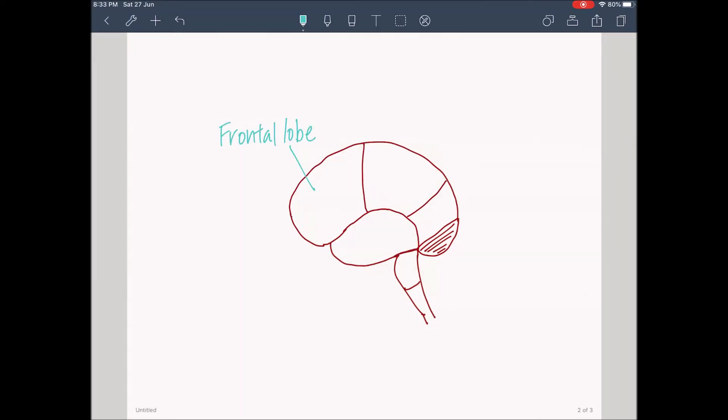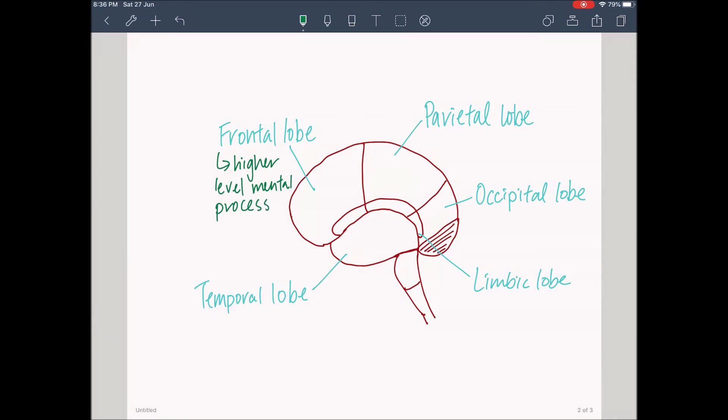The principal lobes of the brain are the frontal lobe, the parietal lobe, the occipital lobe, the temporal lobe, and the limbic lobe. The frontal lobe is responsible for higher-level mental processes, such as reasoning, planning, problem-solving, motivation, emotions, and speech.